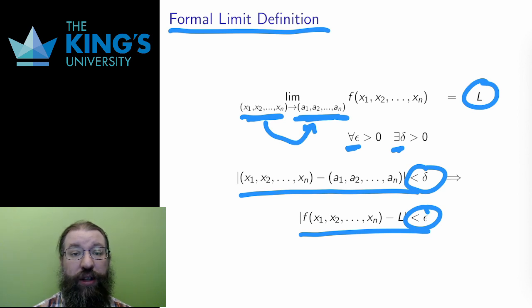This delta and epsilon language is the formal way of saying that as the input gets closer and closer to the point (a₁ to aₙ), the output gets closer and closer to the scalar value L.